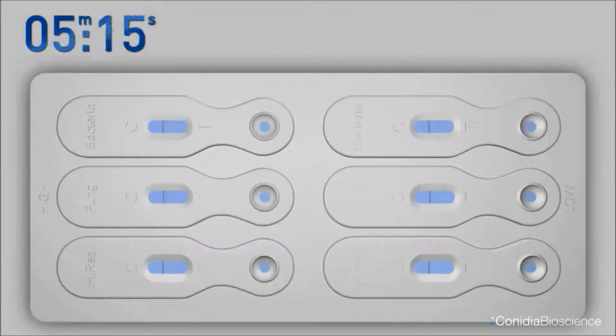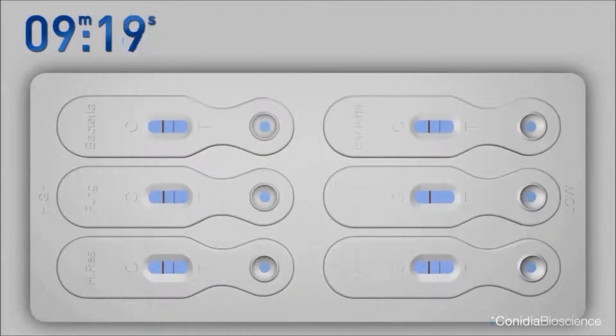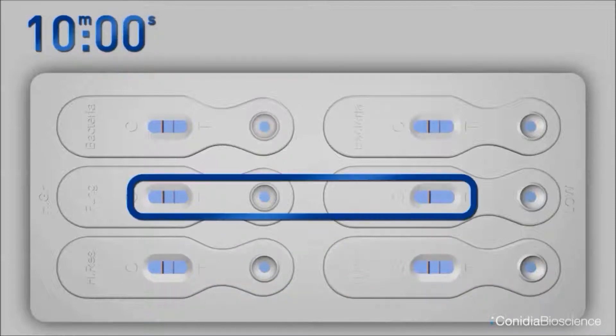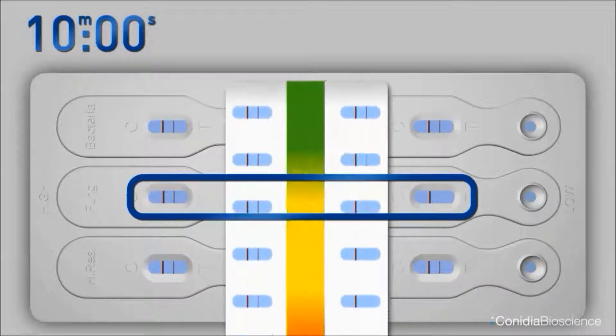In the event of a test line not being visible in a viewing window on the right side of the test paddle, this would indicate a low positive or moderate contamination.